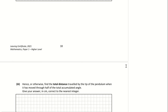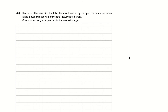Part B3: find the total distance traveled by the tip of the pendulum when it has moved through half of the total accumulated angles, correct to the nearest centimeter. The total angle from part 2 was 260 degrees, so half of that is 130 degrees. We need to find the number of swings N required to accumulate 130 degrees, using the sum formula Sn equals A times (1 minus R to the power of N) all over 1 minus R.